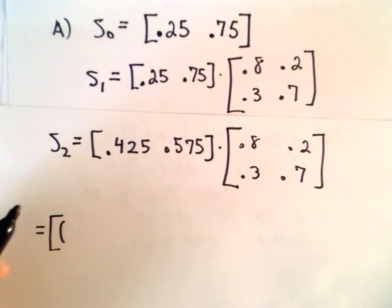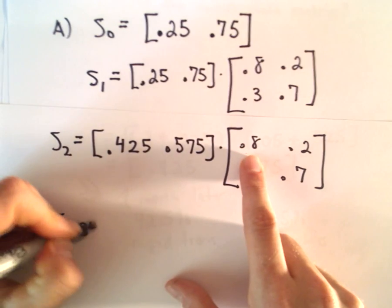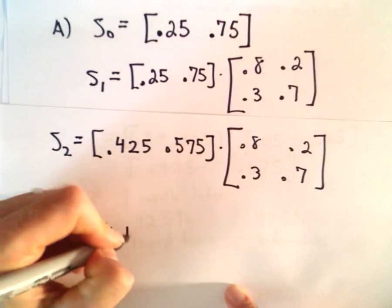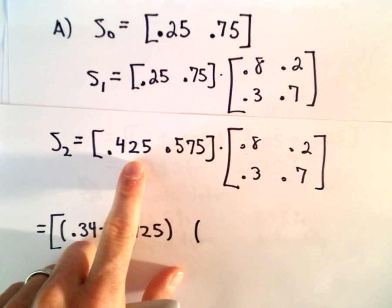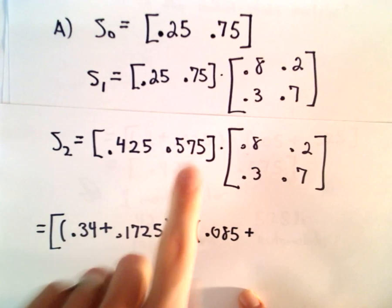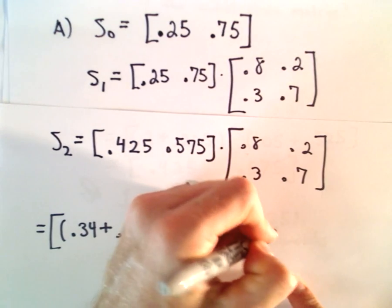Let's see, 0.425 multiplied by 0.8 gives me 0.34. I'll add to that 0.575 multiplied by 0.3, which is 0.1725 as my first entry. Then my second entry, I'll take 0.425 multiplied by 0.2, that gives me 0.085, and then I'm adding 0.575 multiplied by 0.7, which is 0.4025.